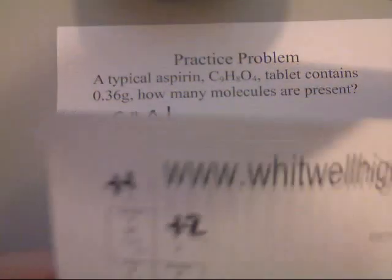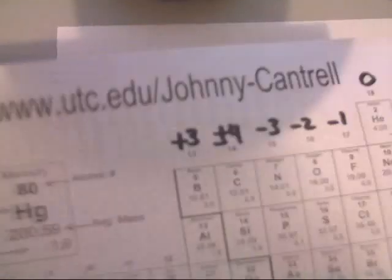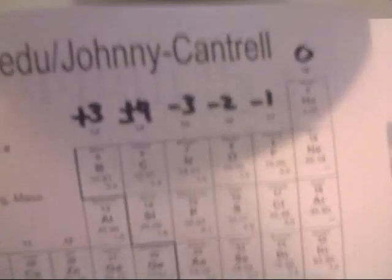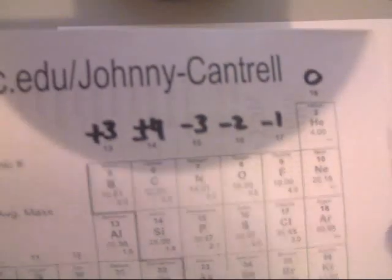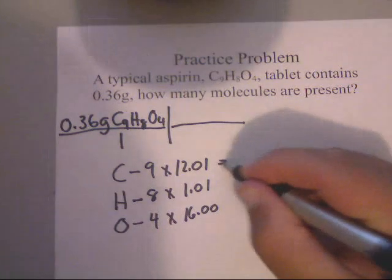So, I'm getting all these off of our periodic table. Hydrogen is 1.01. Carbon is 12.01. And oxygen is 16.00. Now, let's do this.